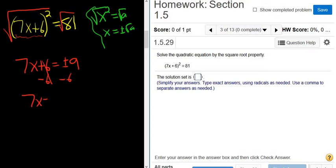So we get 7x equals minus 6 plus or minus 9. You can put the minus 6 in the back too, it doesn't really matter. I put it in the front because it looks better. Then you divide by 7, so we get x equals negative 6 plus or minus 9 over 7.